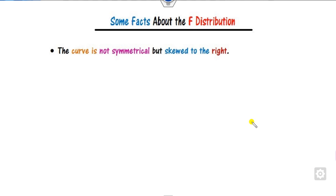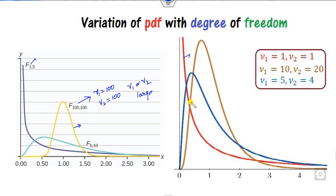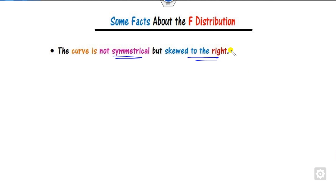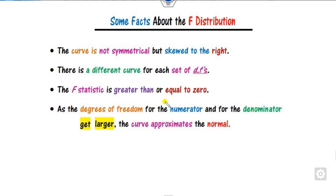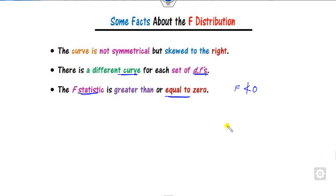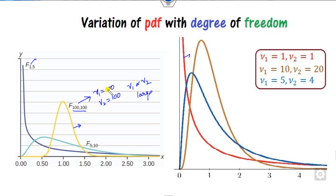Some key facts: the curve is not symmetric but is skewed to the right, because there is more tail on the right-hand side. For different values of the degree of freedom, you have different curves. The F statistic is always greater than or equal to 0 — it can never be less than 0. As the degrees of freedom of the numerator and denominator get larger, the curve approximates the normal distribution.